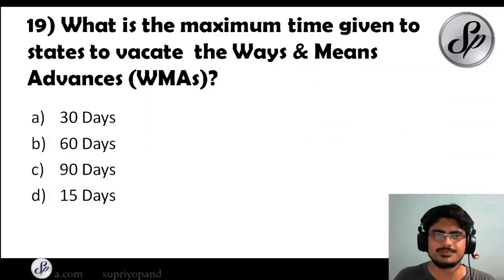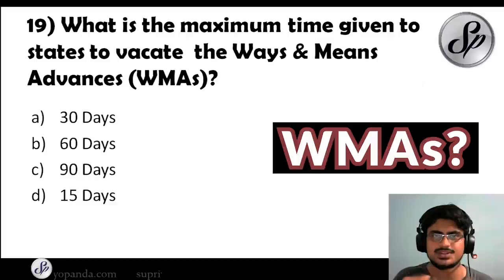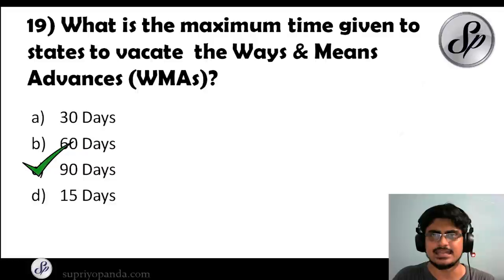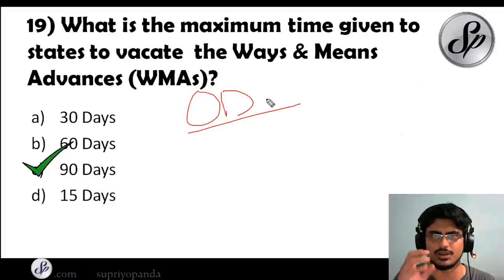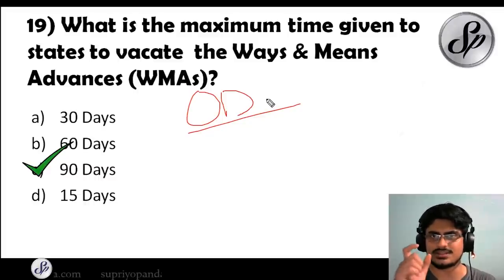Question nineteen: what is the maximum time given to states to vacate the Ways and Means Advances (WMAs)? WMAs help state governments get money for their operations, which must be returned to the RBI. The answer is 90 days. Also note: there is an overdraft (OD) facility in the WMA — a state can borrow beyond the WMA limit, but that OD must be vacated within 10 days.